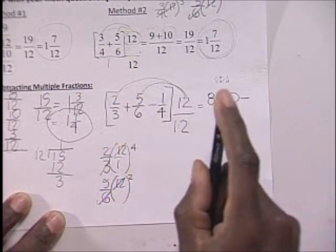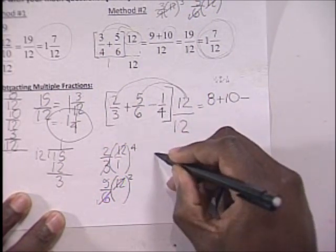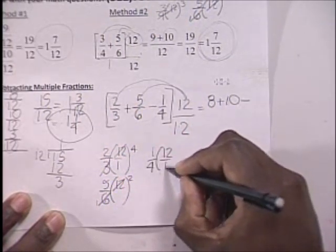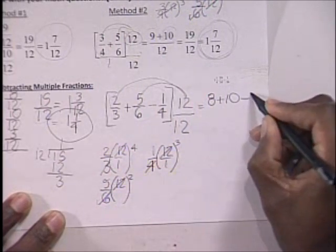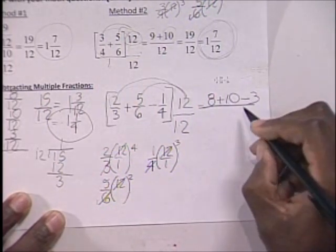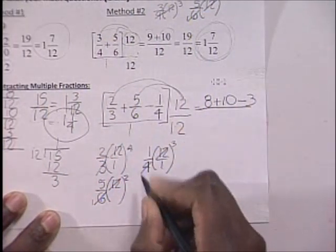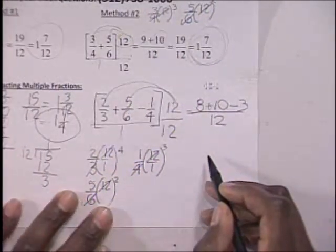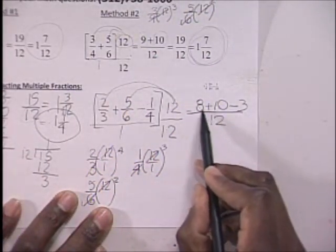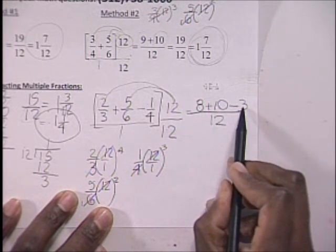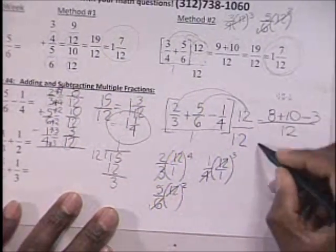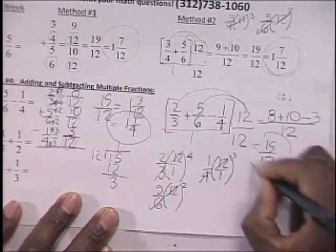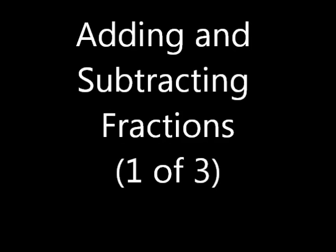Then you have minus: multiply 1 fourth times 12. The 4 cross-cancels with the 12 to give 3, so you end up with 1 times 3, which is 3. So you have 8 plus 10 minus 3. The denominator becomes 1 times 12, which is 12. 8 plus 10 is 18, and 18 minus 3 gives 15 over 12 — the same answer as before: 15 over 12, which simplifies to 1 and 1 fourth.